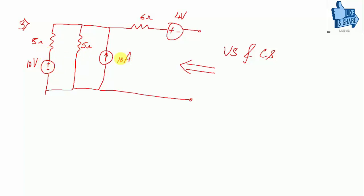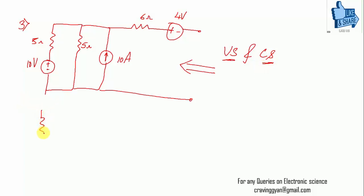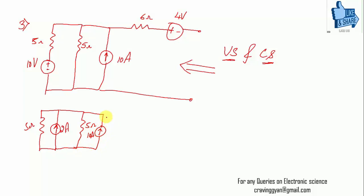First, convert the 10 V, 5 Ω voltage source into a current source: current equals 10/5 = 2 amperes, in upward direction (positive polarity on top), with 5 Ω in parallel. We now have two current sources: 2 A and 10 A, both with 5 Ω in parallel, along with the remaining network of 6 Ω and 4 V.